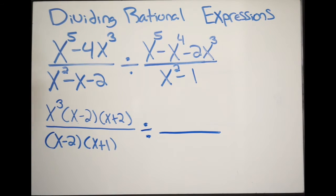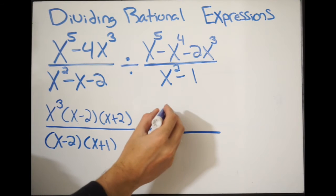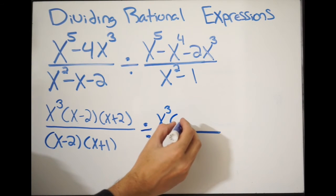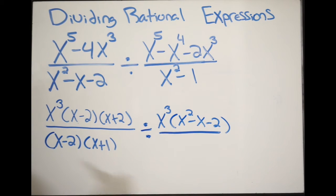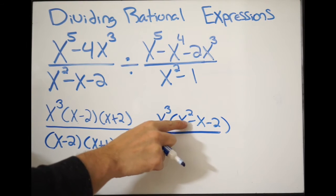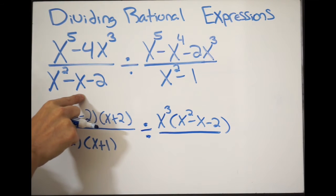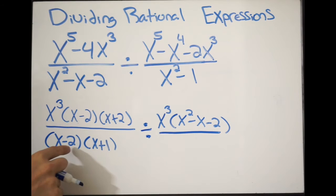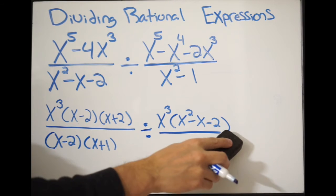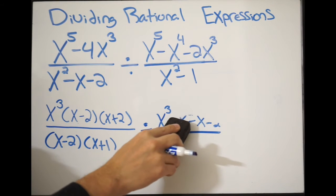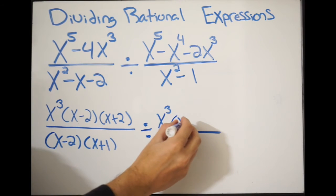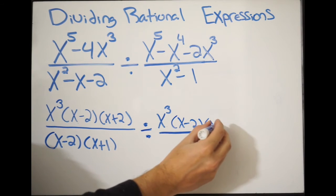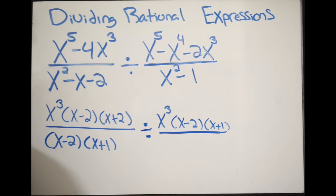Let's move on to factor this. I can pull out a greatest common factor of x to the third, and then I'm left with x squared minus x minus 2. This is exactly the same as what I had down here, so I'm going to factor this as x minus 2 times x plus 1.